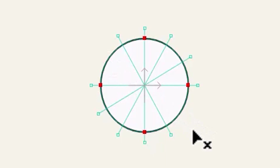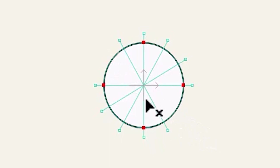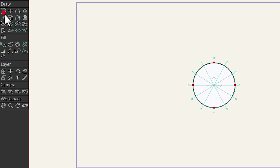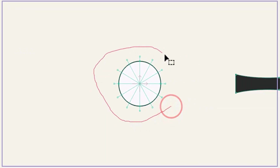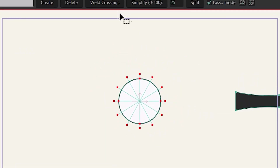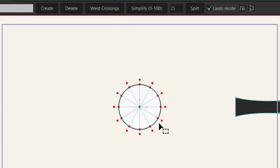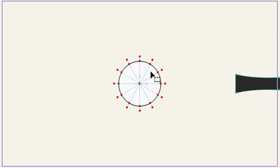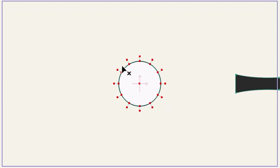But you can't delete edges where there's no point to divide the line into two parts. So I'm going to hit Ctrl+Z and choose the select point tool. By dragging I'm going to select all of these points and choose 'Weld Crossing' — this puts a point where a line intersects another one. If I hit the T key to select the delete edge tool, now I can simply delete these edges. We don't need the circle either, so let's delete it.